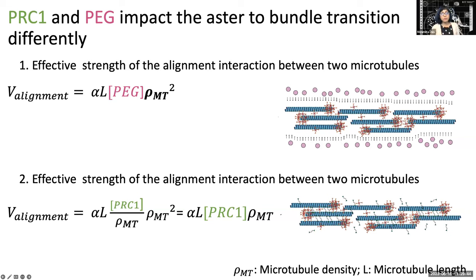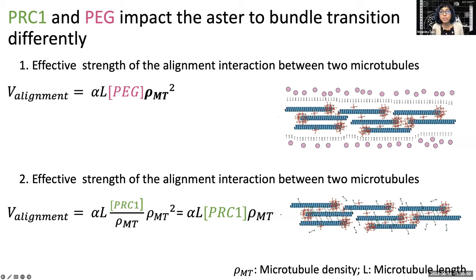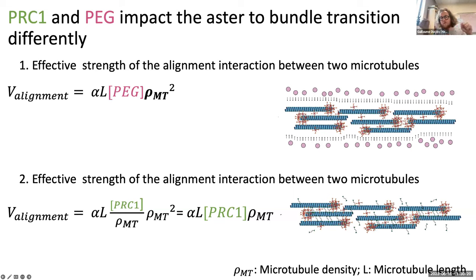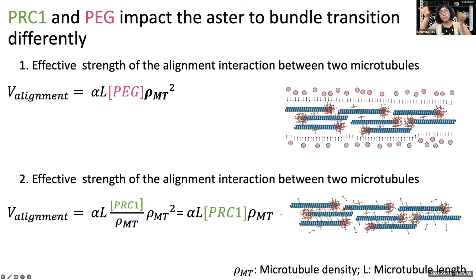My quick question was about the transition from local contraction to global contraction. Is that just concentration of motors, or does it also depend on having more asters versus bundles? I think it's a very different type of transition — more like a percolation transition. In a very thin sample you get asters far apart from each other, but if you increase the height of your sample, asters can connect not just in 2D but also in 3D, forming a globally contractile phase. So you want a more well-connected percolating structure.